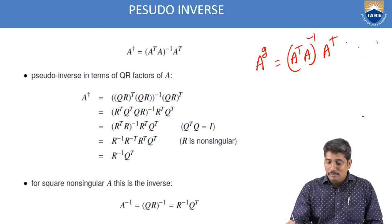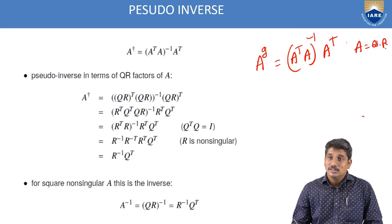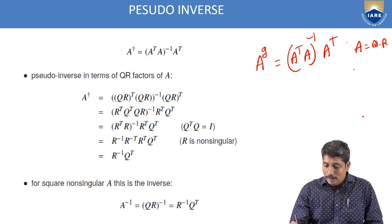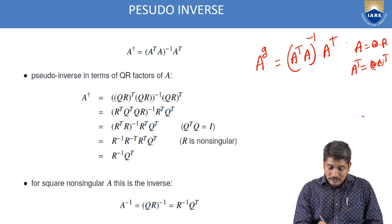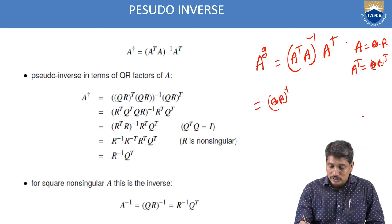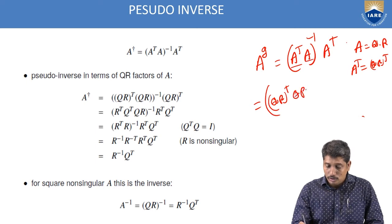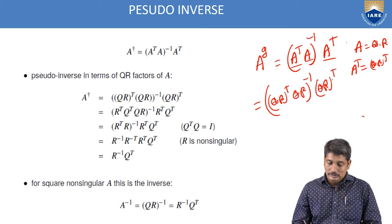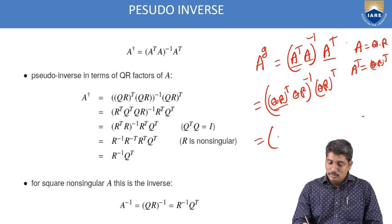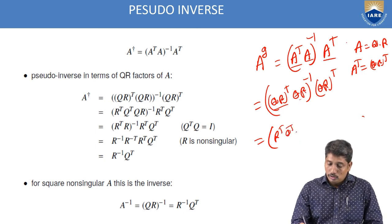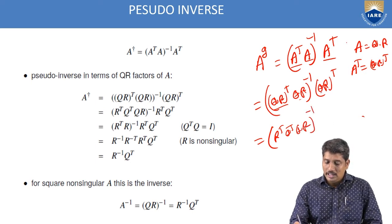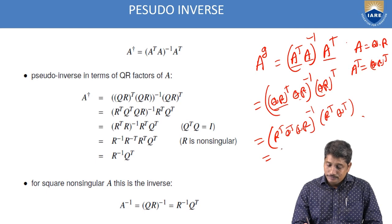Since every matrix can be decomposed as A = QR, we have Aᵀ = (QR)ᵀ. By substituting QR in place of A and (QR)ᵀ in place of Aᵀ, we can work through the pseudo-inverse formula. Recall that (AB)ᵀ = BᵀAᵀ, so (QR)ᵀ = RᵀQᵀ, and (QR)⁻¹ = R⁻¹Q⁻¹.